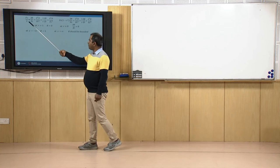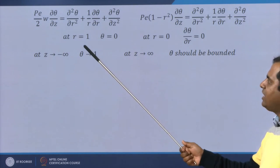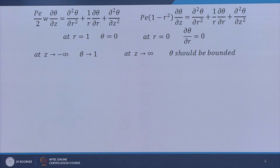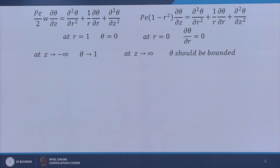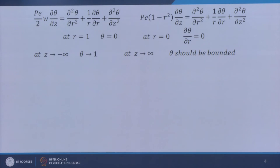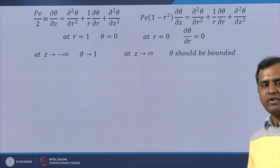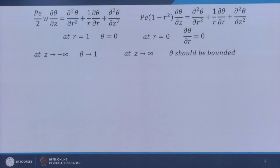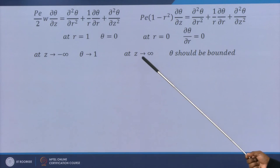Simplifying further: alpha and r0·w_avg give the Peclet number, so we get (Pe/2)·w·(∂θ/∂z) equals the radial conduction term plus the axial conduction term. Putting w = 2(1 − r²), we get the equation in this form. The boundary conditions are: at r = 1 (wall), theta = 0 since T becomes Tw; at r = 0 (axis), ∂θ/∂r = 0 (no temperature gradient); at z → −∞, theta = 1 since T becomes Ti; and at z → ∞, theta is bounded.